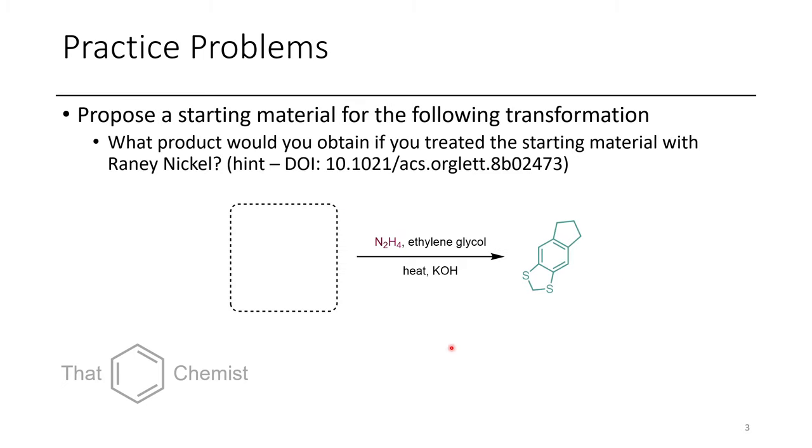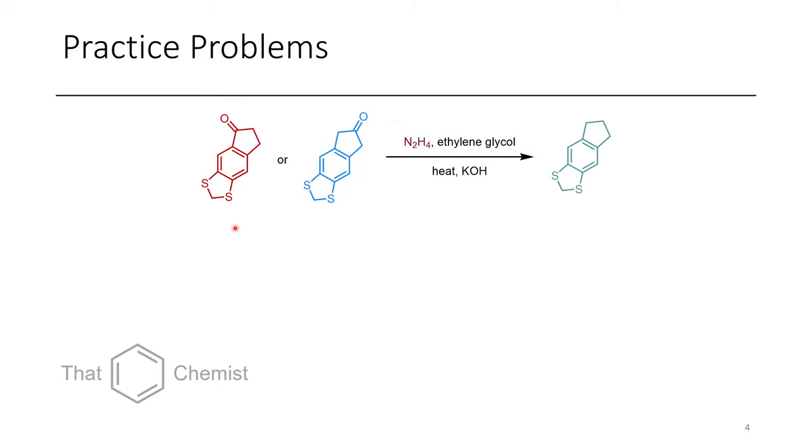In the next problem, I ask you to propose a starting material for the following transformation, and then I also want you to show, based on this starting material, what would you get if you treated it with Raney nickel. There are two different possible starting materials you can imagine. You can either have the ketone right in the benzylic position, or alpha to it, right here.